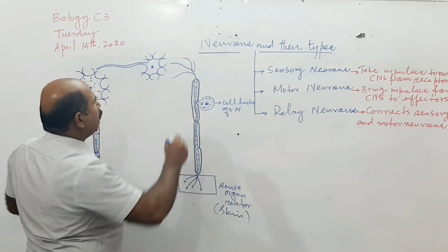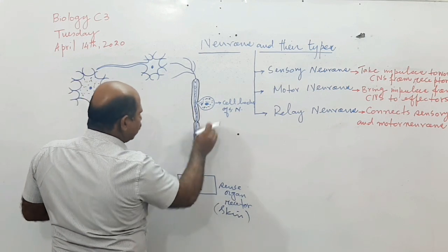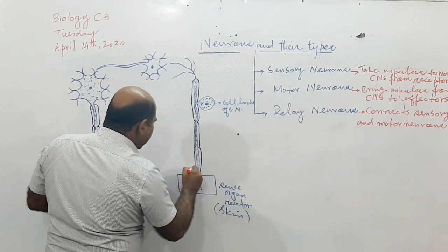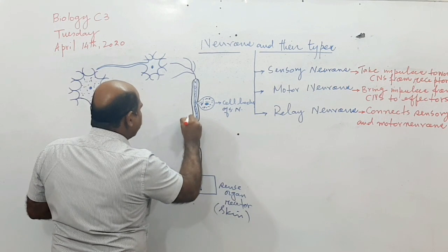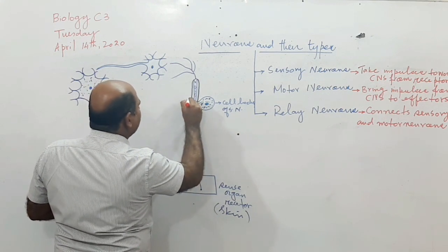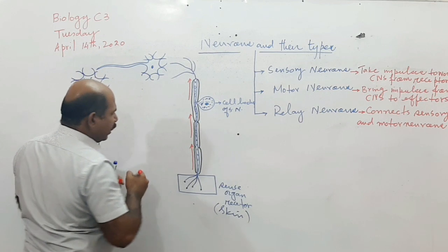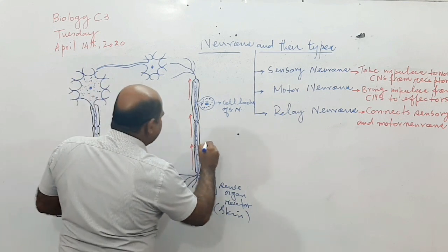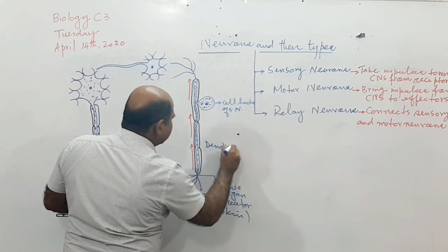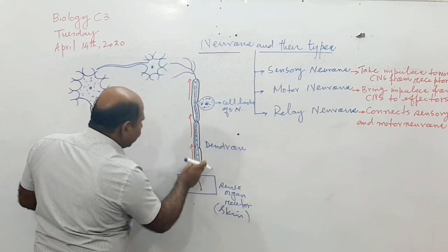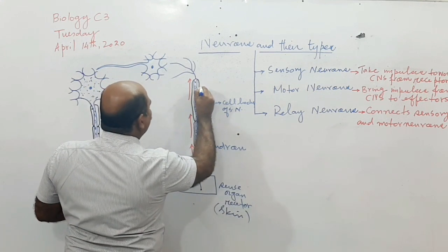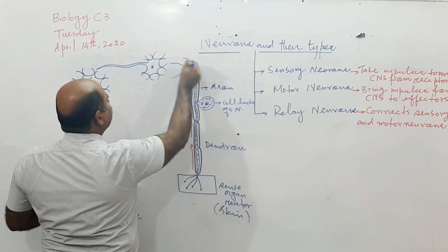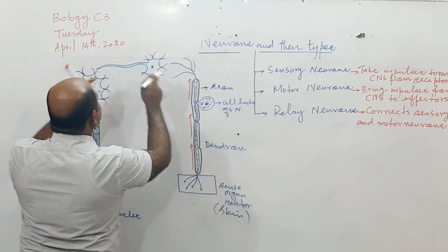It is called the sensory neuron because it brings the message from skin to the CNS — either to the brain or to the spinal cord. The red mark shows the nerve impulse: it first comes here and then moves towards the cell body. This part bringing the message towards the cell body is called the dendrone — it is a single one so we call it dendrone. This other part is called the axon.